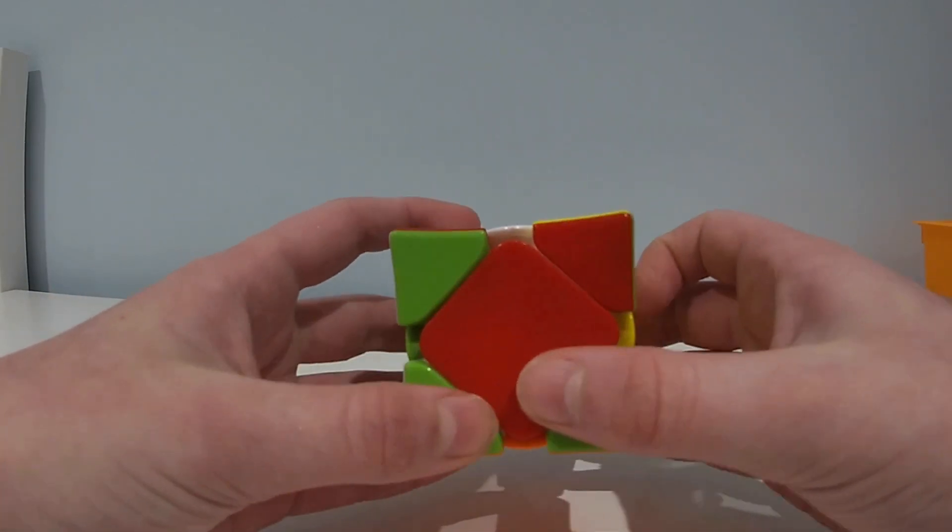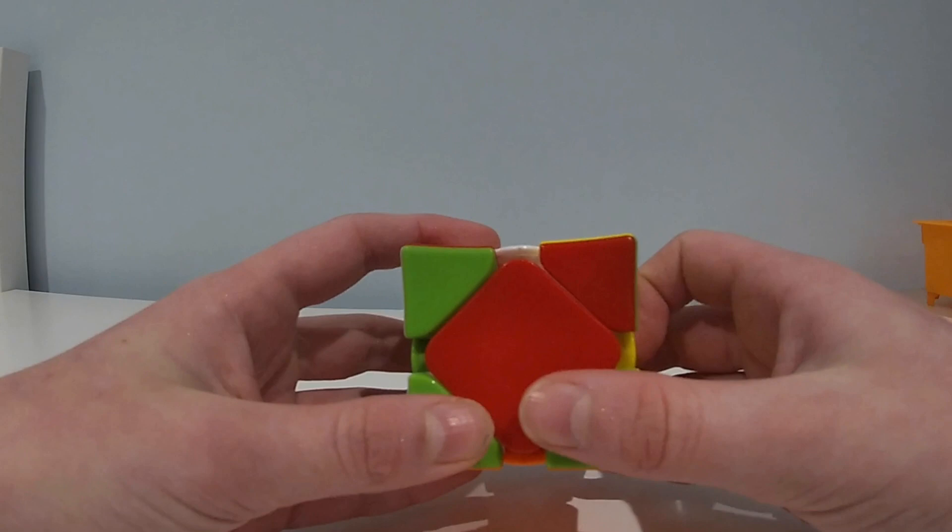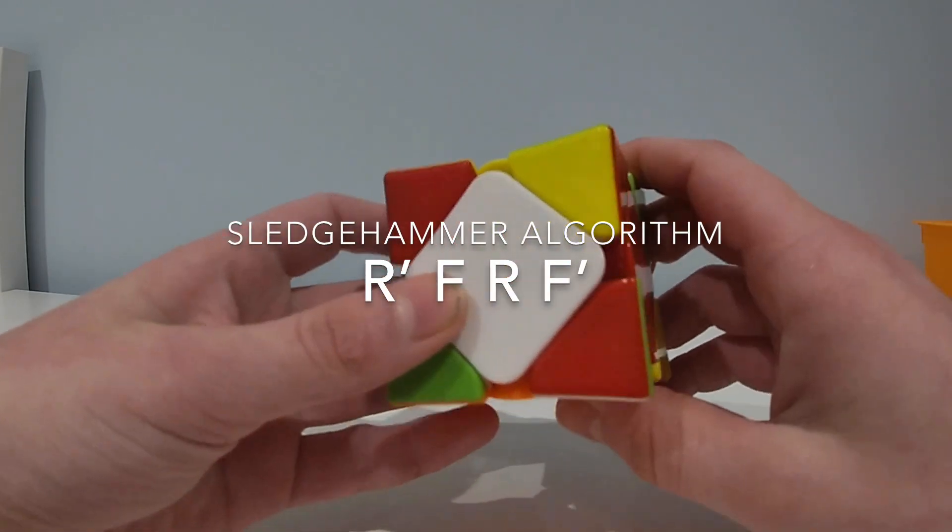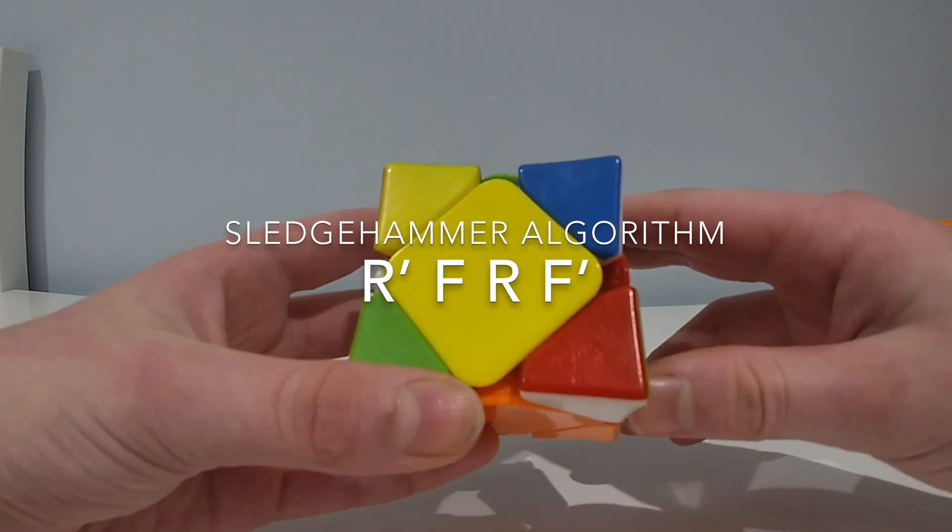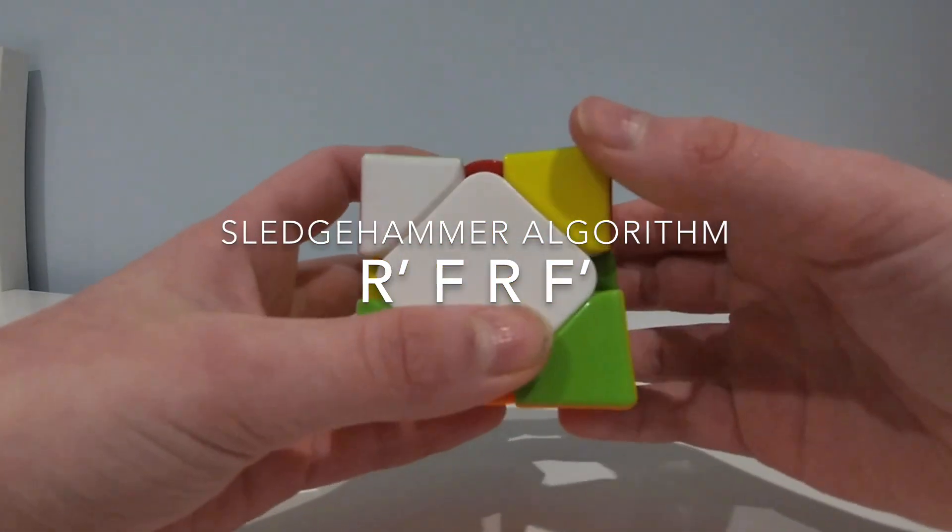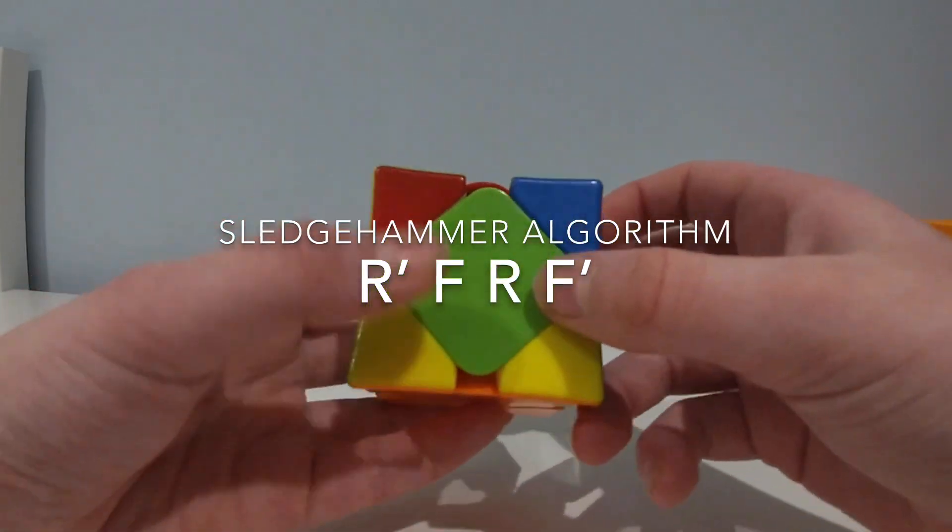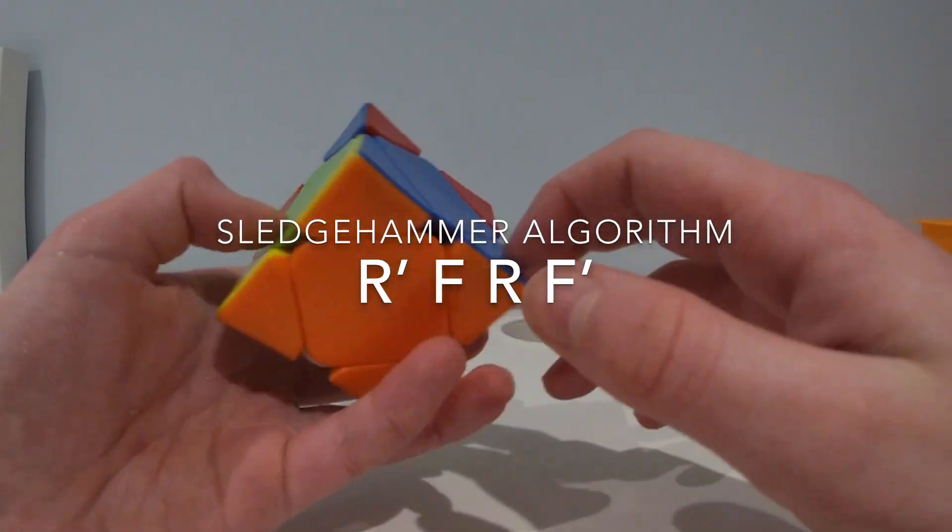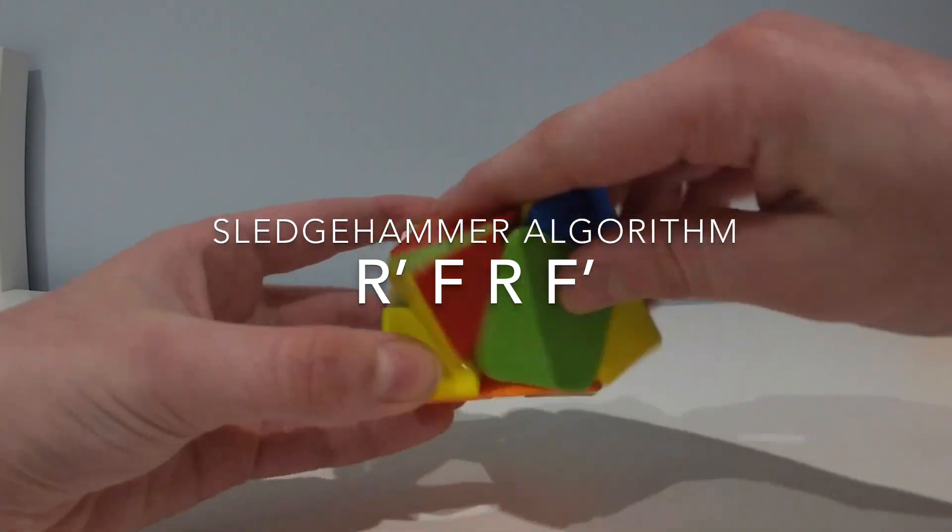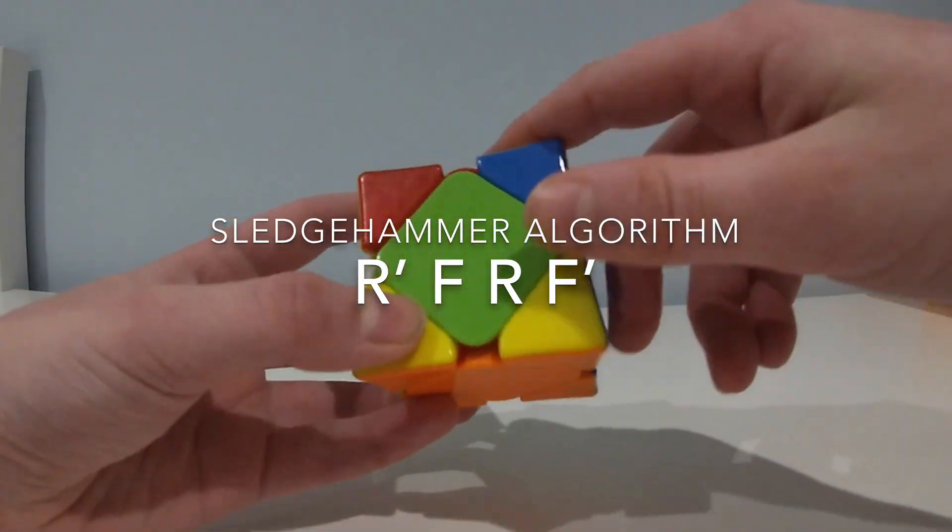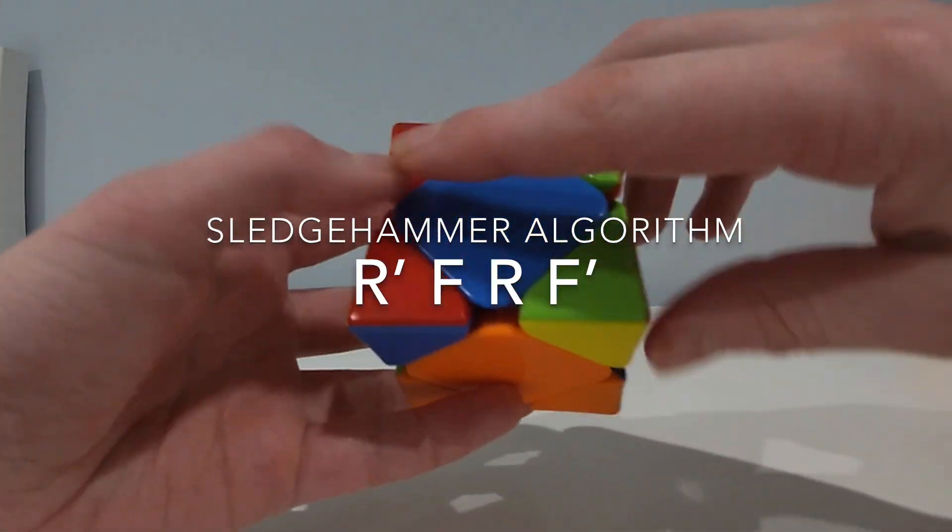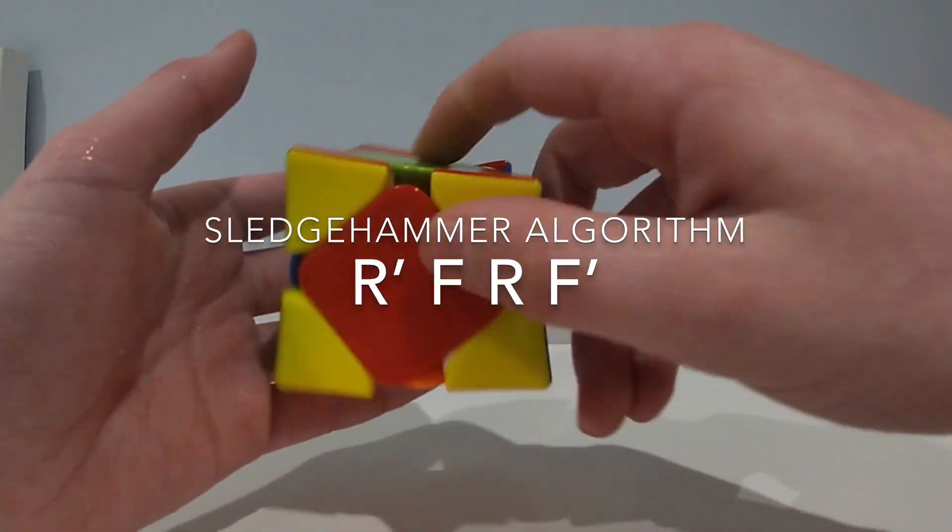You then do the algorithm, the sledgehammer algorithm. R prime, F, R, F prime. This then just gives you the pi case. And again, you can do the algorithm. The sledgehammer algorithm that is. R prime, F, R, F prime.